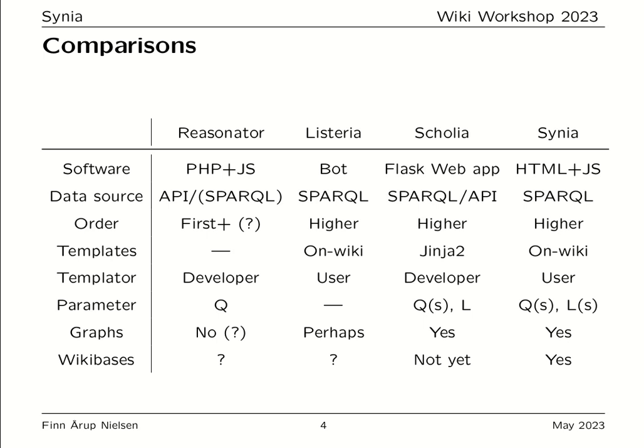The way templates are defined — what to display — differs across tools. In Listeria, it's done on-wiki and can be done by any user. In Scolia, you need to involve the Scolia developer and edit Python code to create aspects and panels. In Cynia, it follows the Listeria approach where you define templates on-wiki and any user can do that.